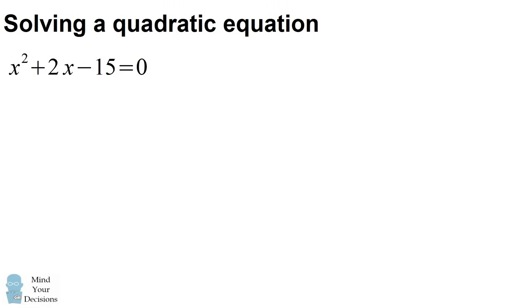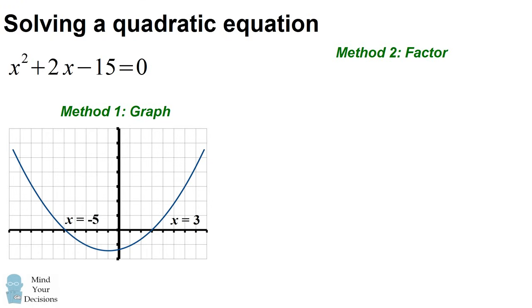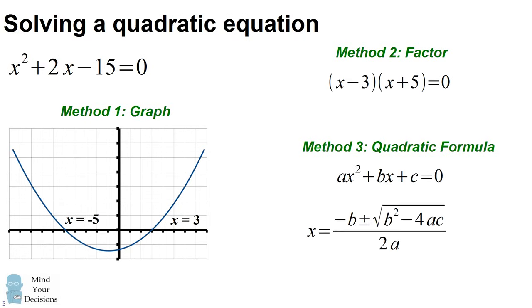Imagine you want to solve x squared plus 2x minus 15 equals 0. You could solve this by graphing the equation — the points at which the graph crosses the x-axis are the solutions. You could also solve this by factoring into linear terms and setting them equal to 0. When those methods don't work, the quadratic formula will always tell you how to solve any quadratic equation with arbitrary constants a, b, and c. But unfortunately, it's not often presented in an intuitive way.